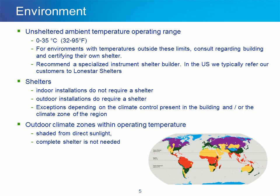The ambient operating temperature range for an unsheltered Reactor Air 45P is 0 to 35 degrees Celsius, which is 32 to 95 degrees Fahrenheit. For environments with temperatures outside these limits, we can consult with the customer regarding building and certifying their own shelter. If this is not a task the customer wishes to pursue, we can recommend a specialized instrument shelter builder. In the U.S., we typically refer customers to Lone Star Shelters. Indoor installations often do not require a shelter, whereas outdoor installations typically do, with exceptions depending on climate control and climate zone.